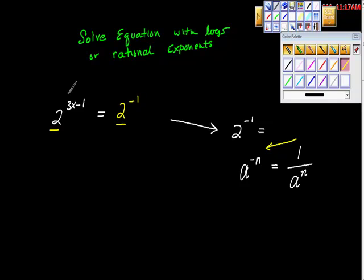And then all I have to do is get their exponential values to be equal. So what I can do from here, this problem is solved now. This problem becomes really an easy linear problem. We have 3x minus 1 is equal to negative 1.